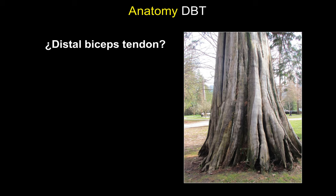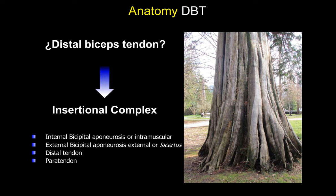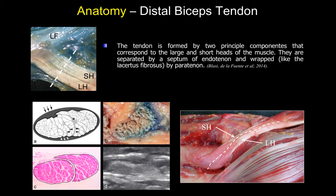In anatomy we have always considered only the distal biceps tendon, but we should really consider a distal biceps insertional complex that includes the bicipital or internal intramuscular aponeurosis, the external aponeurosis or lacertus fibrosus, and also the proper tendon and the paratendon covering the entire structure. In most individuals the distal biceps tendon is made of two separate components corresponding to the long and short heads of the muscle, separated by a septum of endotendon, covered by a single paratendon. On ultrasound, these two components can be clearly identified as ovoid structures with different shapes.